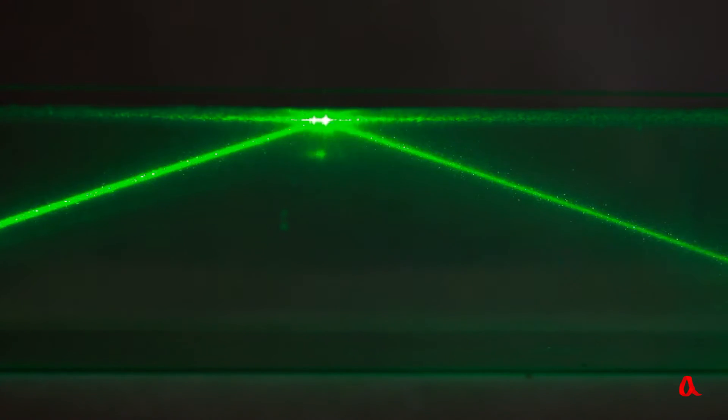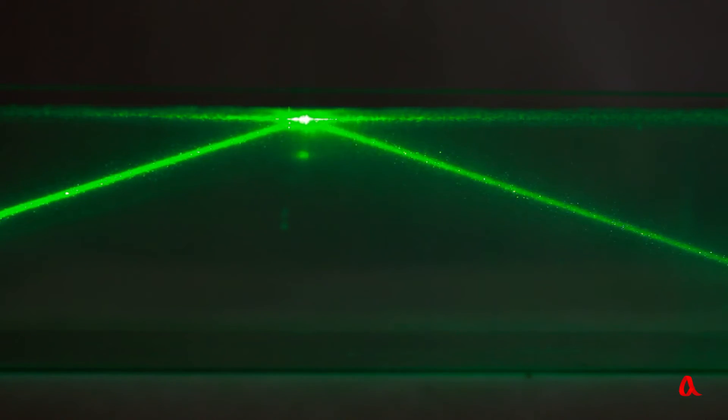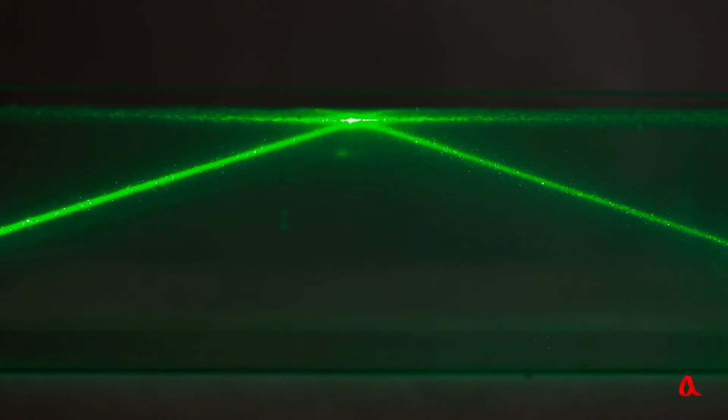We direct a laser beam onto the side surface of a basin at an angle to the water surface. The beam is reflected from the surface back into the water, as if it were a mirror.